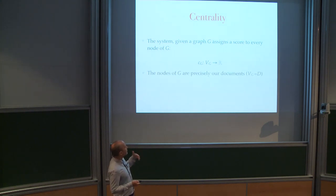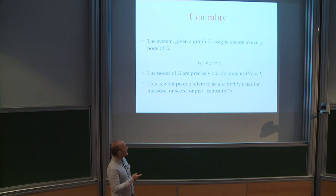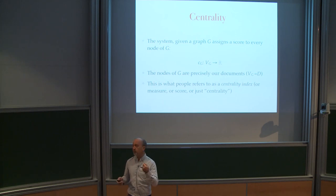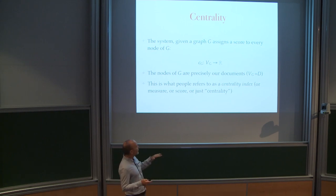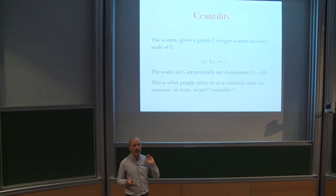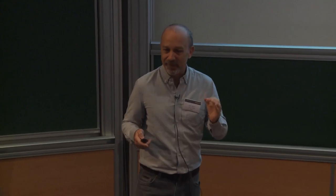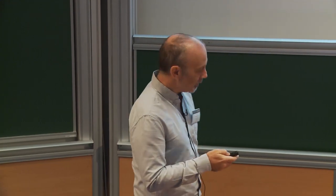Centrality is a way to assign a measure of importance to every vertex in a graph. This is called a centrality index, centrality measure, or centrality score. I prefer not to use the word 'rank' because rank is something else: you use scores to assign a rank to the documents by sorting them by decreasing score. The rank is something different from the score. It's unfortunate that PageRank is called PageRank — the correct name should be 'page score' because it assigns a score to every page, not a rank.